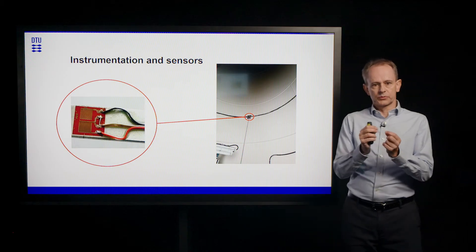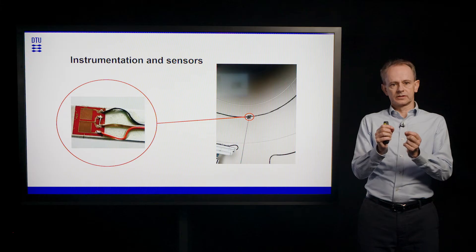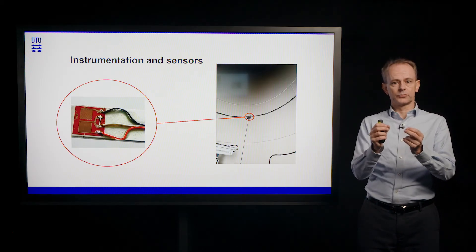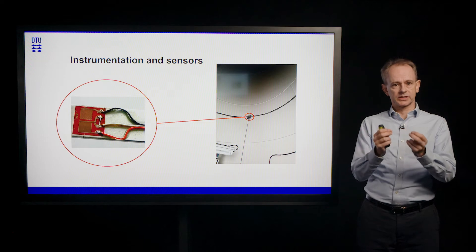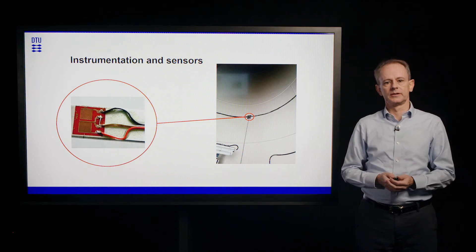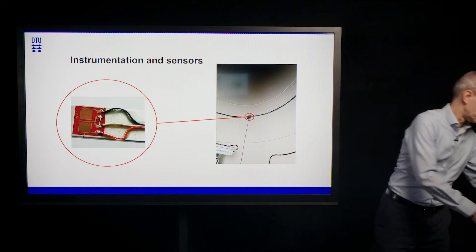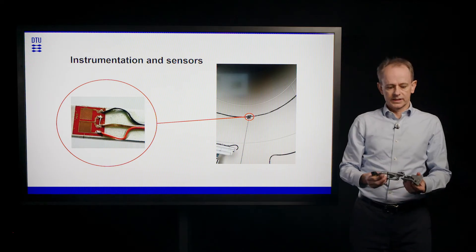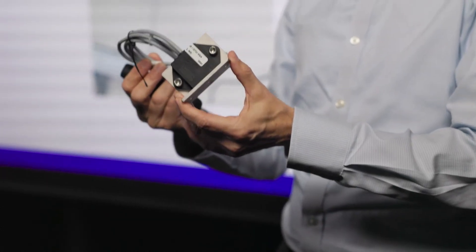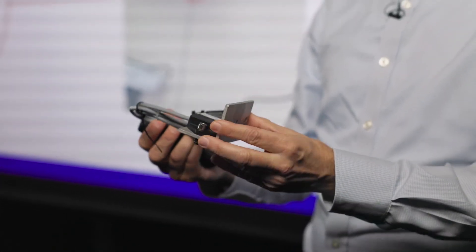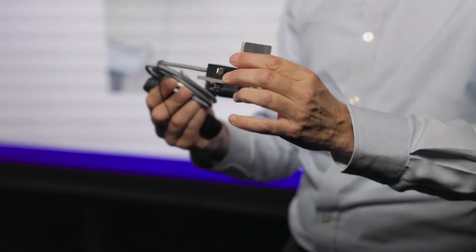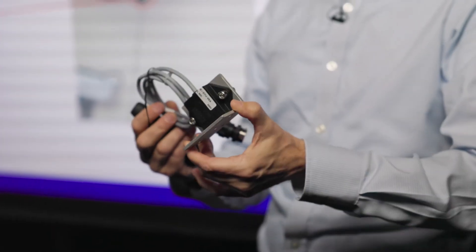By measuring the strain in the surface of the component, we can measure how the loading is. And through a calibration, we can calibrate the measured strain into a sectional load on the turbine. Another device for measuring response on a turbine is an accelerometer. And I have an example here. This device can be mounted on many different types of components and it measures the acceleration that this component is subject to.